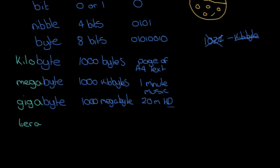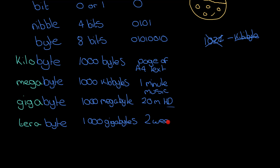Next up is a terabyte — 'tera' relates to monster — and a terabyte is a thousand gigabytes. This is where you start to see the massive differences in scale. If one gigabyte gives you 20 minutes of HD Netflix, then one terabyte gives you about two weeks of high-definition video.